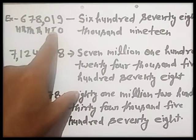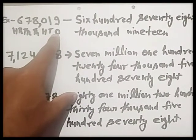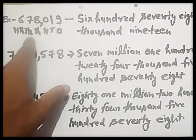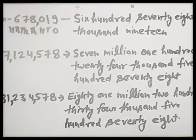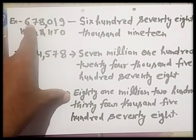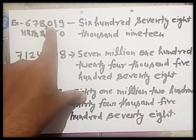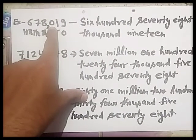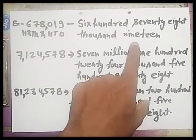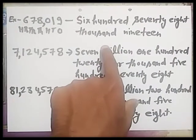You can write the place value according to the international place value chart: ones, tens, hundreds, then thousands, ten thousands, and hundred thousands. So it reads 678,000 and 19 — because there is no digit at the hundreds place, that is why only 19. So: 678,000 and 19.